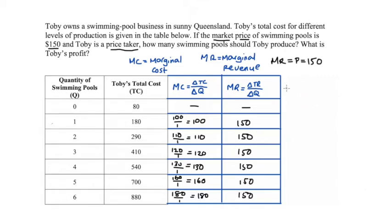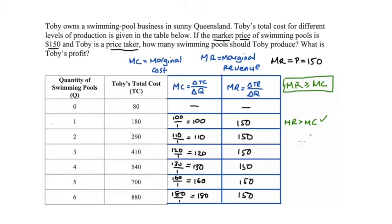Recall the decision rule: Toby produces an additional swimming pool if marginal revenue is greater than or equal to marginal cost. For the first unit, marginal revenue is 150 and marginal cost is 100 — MR is greater than MC, so we produce it. For the second unit, MR of 150 is still greater than MC of 110, so we produce that too. For the third unit, MR of 150 is greater than MC of 120, so that also meets the condition.